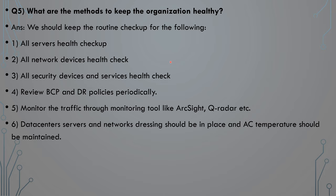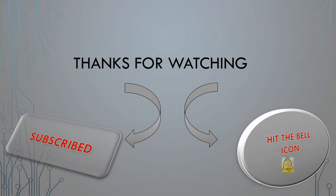Number six: data center server and network cabling should be in place and AC temperature should be maintained. If the cabling of the data center is well managed, there will be less chance of sparking or unusual downtime of the data centers. AC temperature is also an important factor to keep data centers running properly. These are the key questions for interview preparation. Thanks for watching — please subscribe, hit the bell icon, and mention any queries in the comment box.